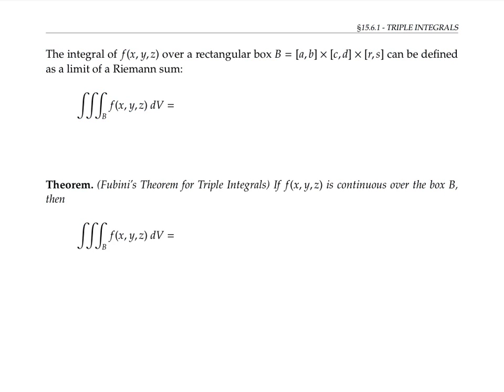We can define the integral of a function f of three variables over a rectangular box, in terms of a Riemann sum. We can think of dividing the big rectangular box into a bunch of tiny smaller rectangular boxes, using, say, l sub intervals in the x direction, m sub intervals in the y direction, and n sub intervals in the z direction.